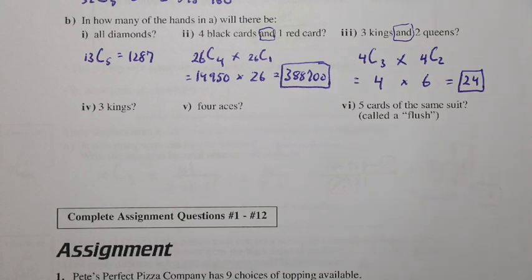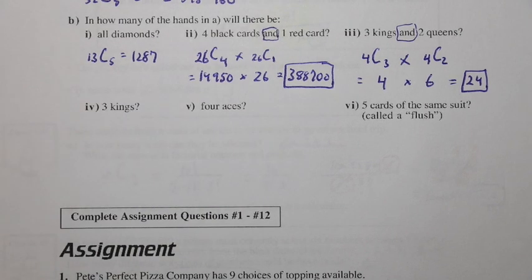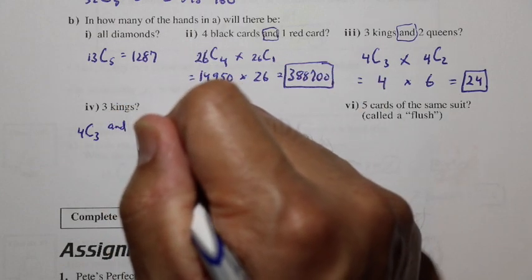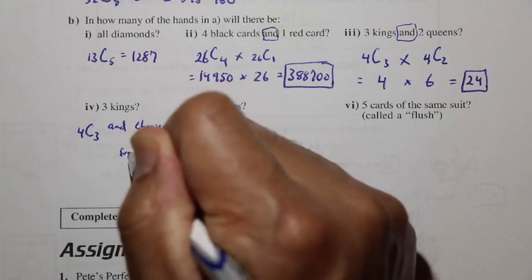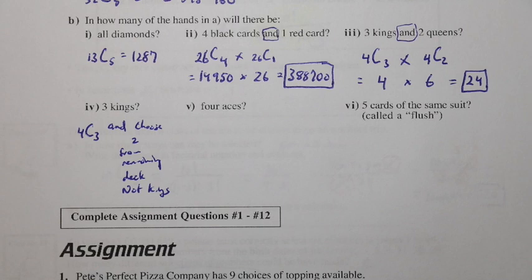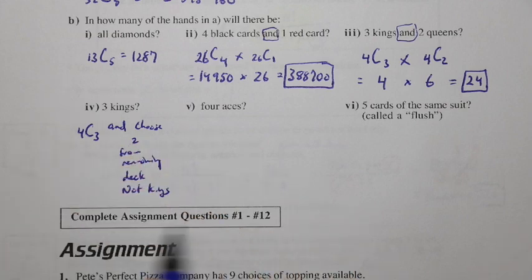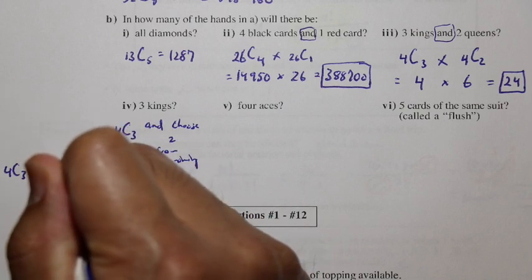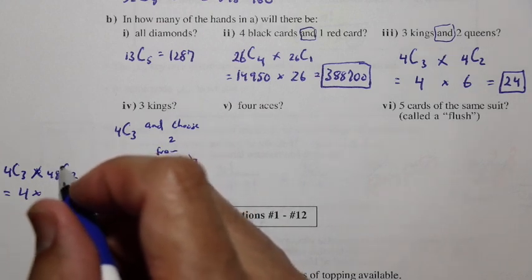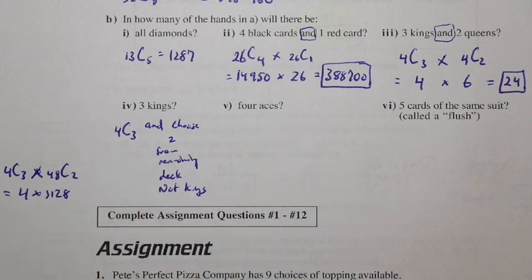What about exactly 3 kings and only kings — meaning we need 3 kings and 2 other cards that are not kings? Out of 4 kings, we select 3. Then, removing all 4 kings from the deck, there are 48 cards left to choose 2 from. So 4C3 times 48C2 equals 4 times 1,128, which gives 4,512.